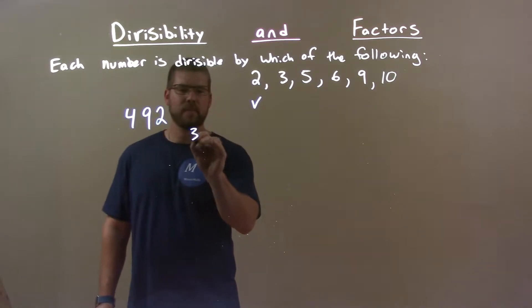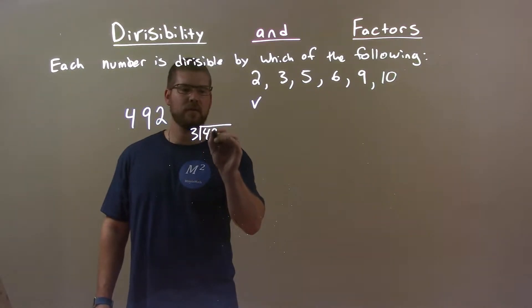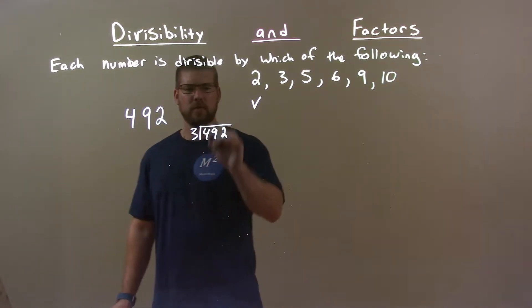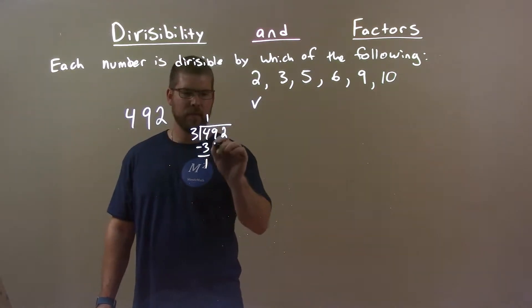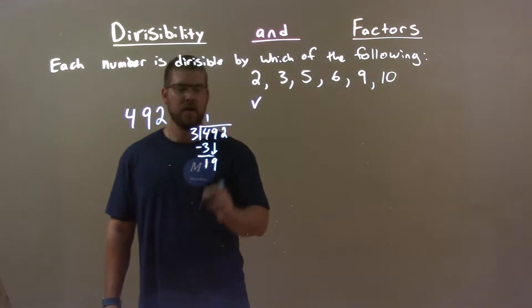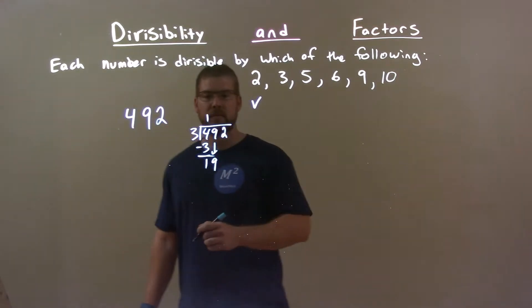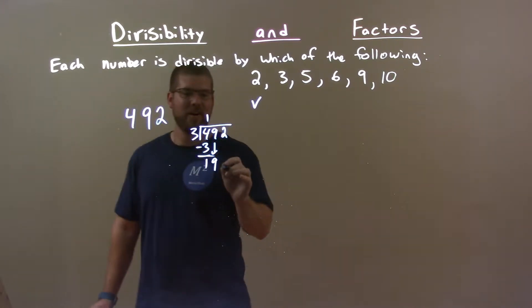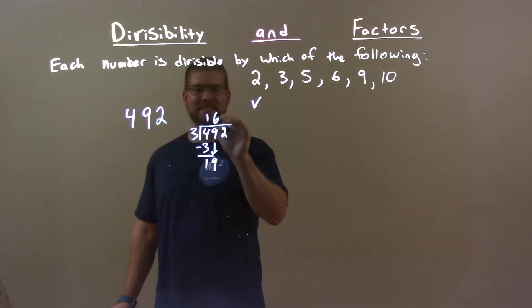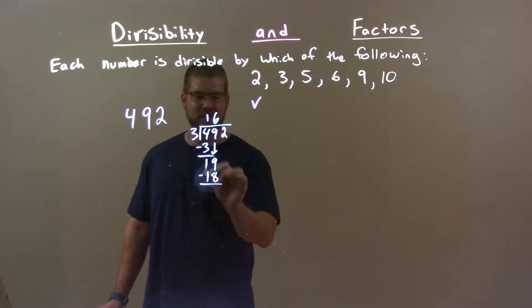Now, let's try 3. 3 goes into 492. Well, 3 goes into 4 one time. 1 times 3 is 3. Subtract the 2. Got a 1. Bring down the 9. 3 goes into 19, that's going to be 6 times. 6 times 3 is 18. Subtract the 2. Got a 1.